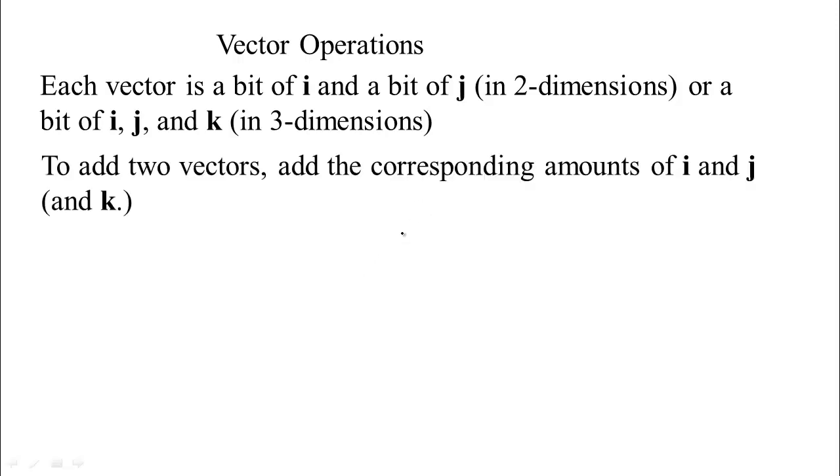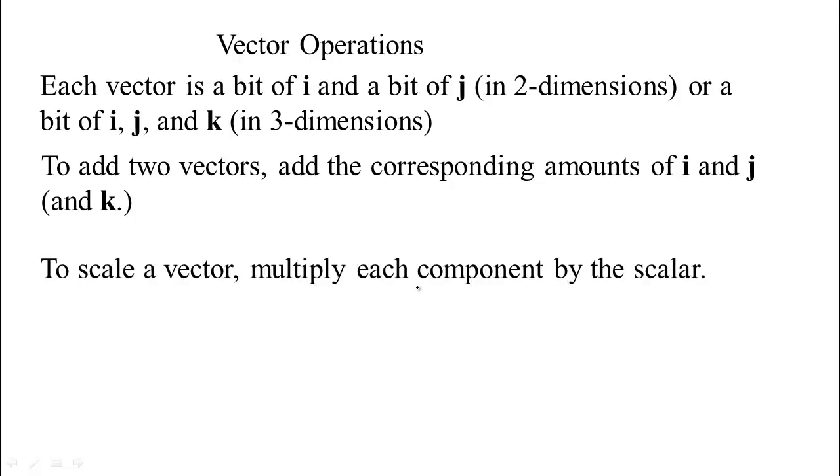To add two vectors, you just add the corresponding amounts of i, j, and k. To scale a vector, you can multiply each component by whatever that real number is, whatever that scalar is, and to subtract two vectors, you just subtract the components.